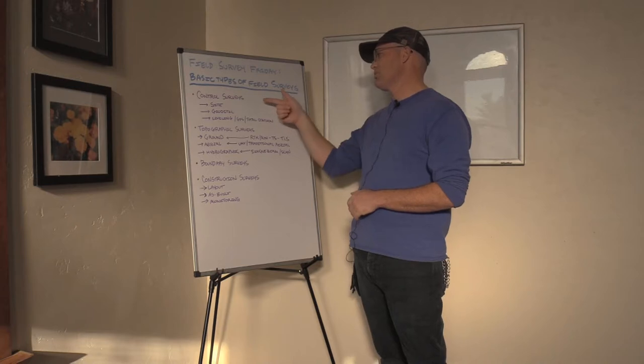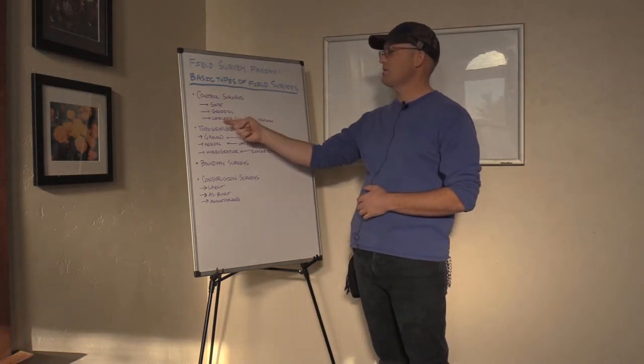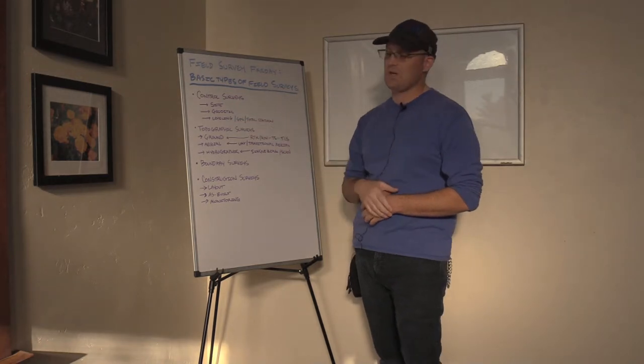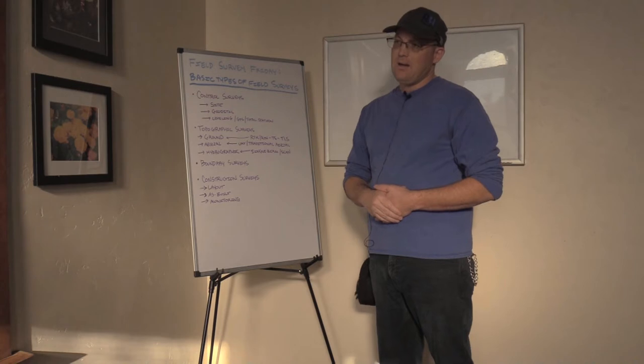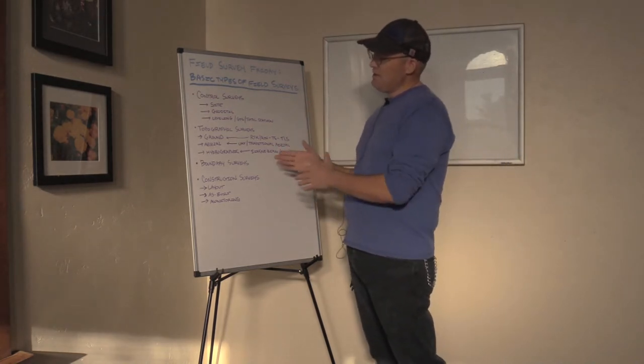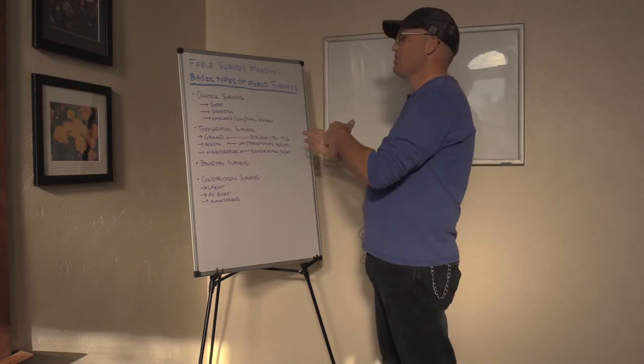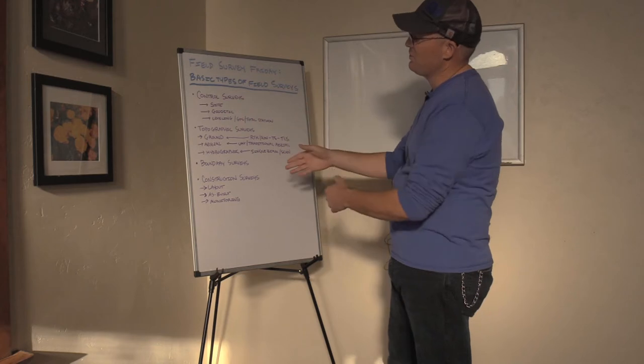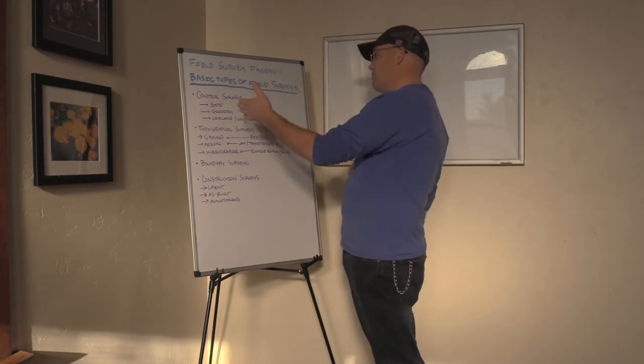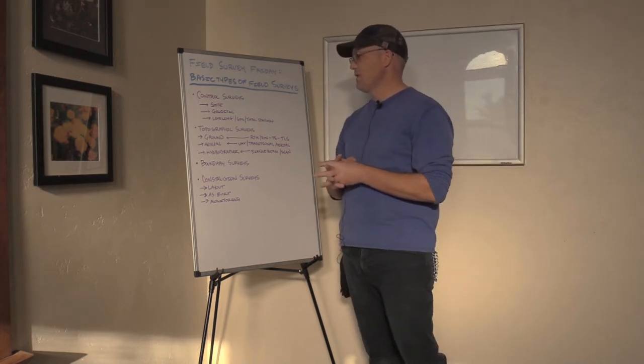And then you might also break those control surveys out just based on the primary method of surveys: a leveling survey, GPS survey, or a total station survey. So those are control surveys. One thing that makes control surveys unique is all the other three kinds of surveys require control. So you may be doing some control surveying as part of these other three types of field surveys. But then we also, at times, will do standalone control surveys field work.